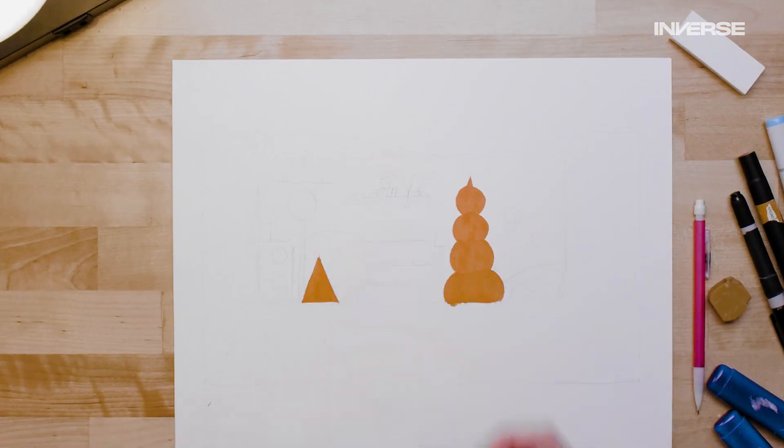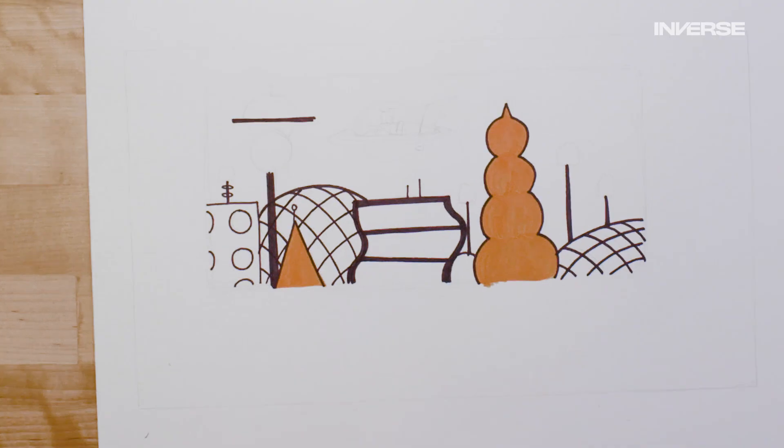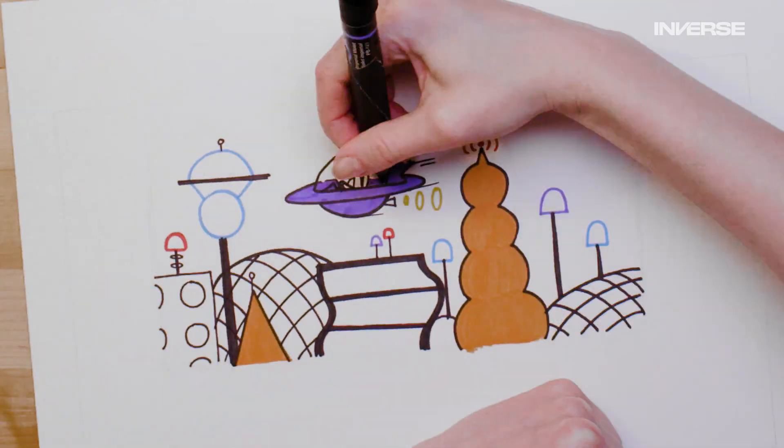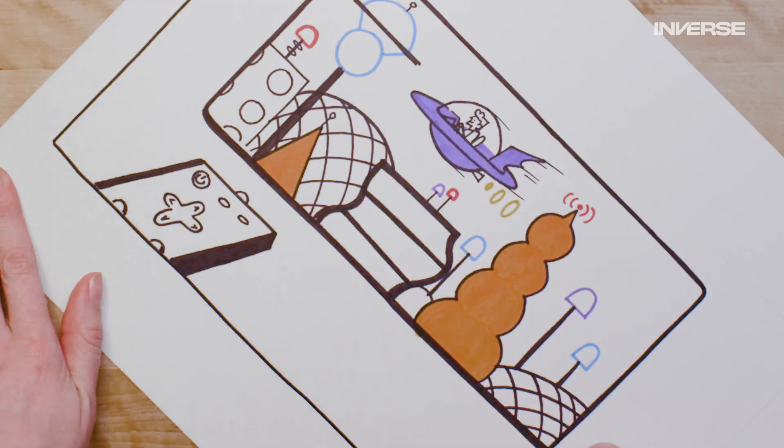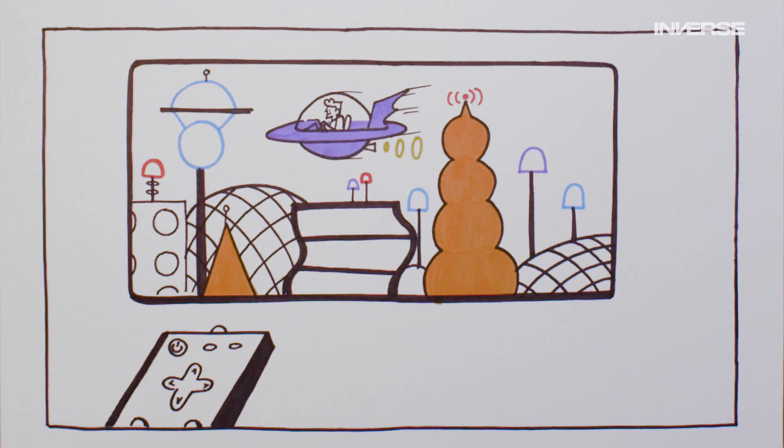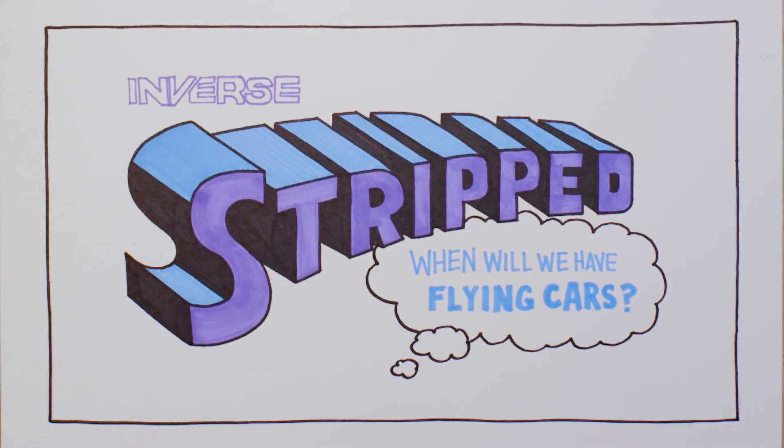Imagine a world where traffic barely exists. That's right, we're talking about flying cars. We've seen them in pop culture for decades, but when will we finally see them in the real world? This is Stripped, where we explain science and culture one line at a time.